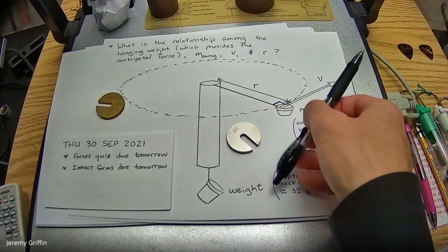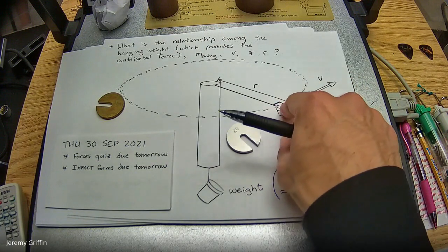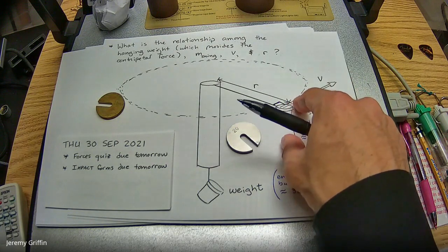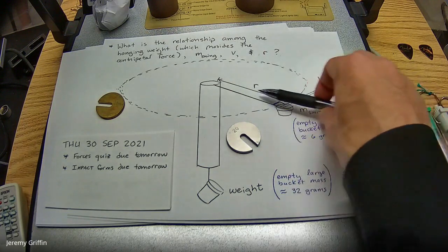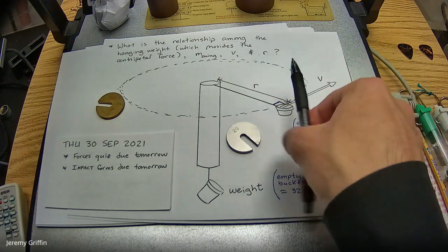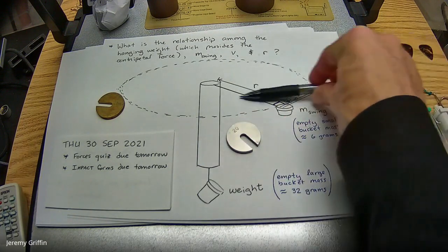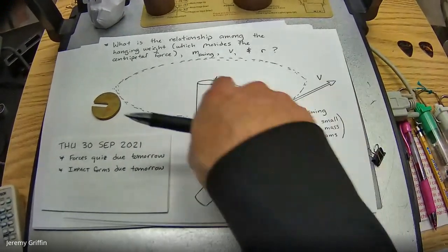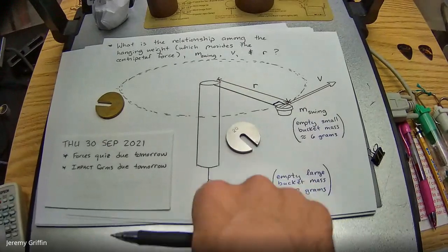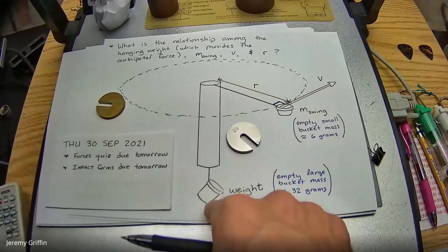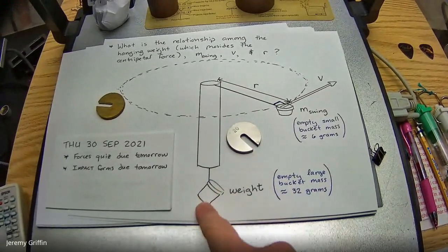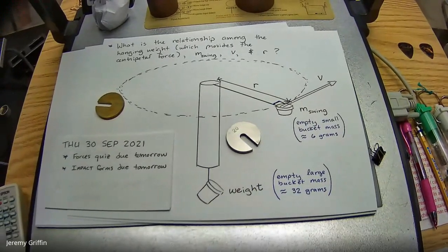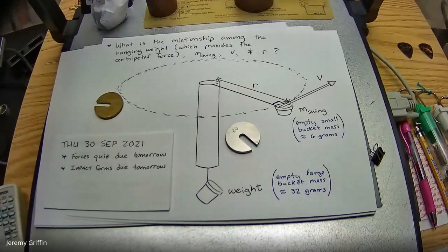But if it's staying on the circular path, that means it's being pulled in to keep it on the circular path. It's being pulled in towards the center, isn't it? That's what centripetal force is, which is the tension in the string, which is also equivalent to and supplied by this hanging weight. That's why you care about the weight of this. You guys good so far?